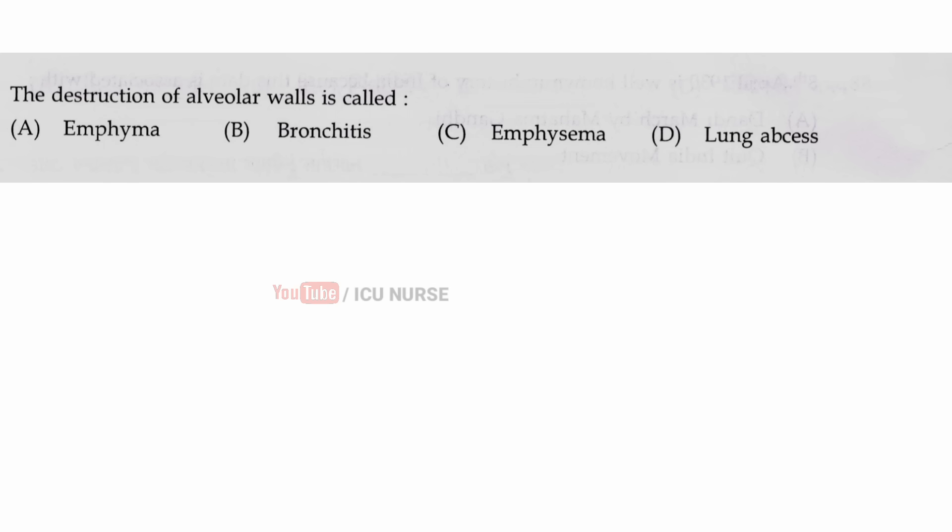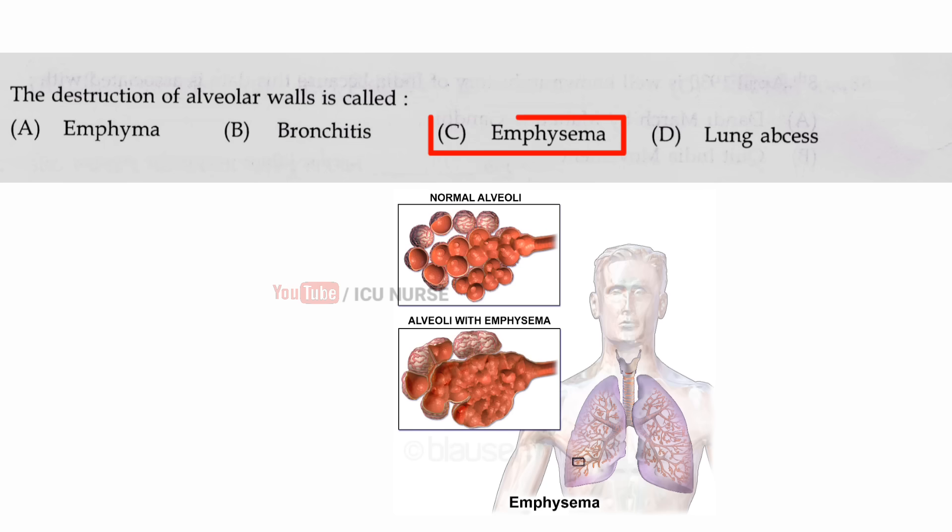The destruction of alveolar walls is called — the correct answer is C — emphysema.